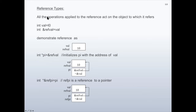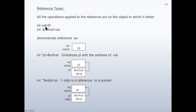Reference Types. All the operations applied to the reference act on the object to which it refers. Here there is a declaration of an integer 'w', which is initialized as 10. Another declaration: ref1 is a reference to an integer, and it is initialized as 'w', meaning that ref1 is a reference to 'w'.